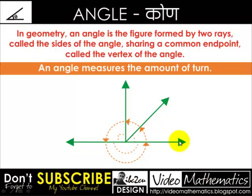This angle measures the turn between this line and this line. The corners of your house form angles, and so do the hands of a watch. You can easily see angles around you.